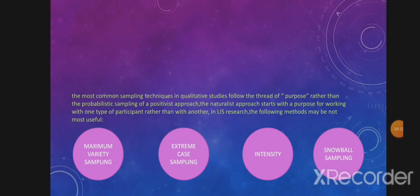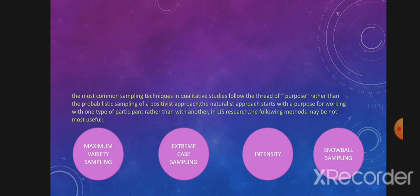The most common sampling techniques in qualitative studies follow the thread of purpose. Rather than the probabilistic sample of a positivist approach, the naturalist approach starts with a purpose for working with one type of participant rather than another. In LIS research, the following methods may be most useful. Maximum variety sampling seeks as heterogeneous a sample as possible and is useful when seeking to identify patterns and commonalities that exist across otherwise divergent individuals. This is analogous to the classic experimental sampling technique known as stratified random sampling, in that population variables are identified in advance so that a deliberate effort can be made to maximize heterogeneity.